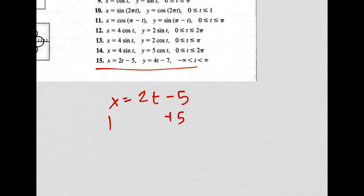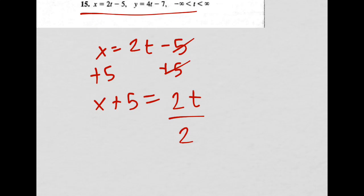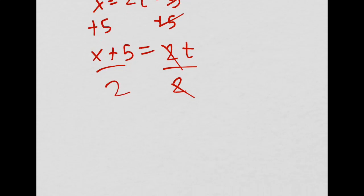I'll add 5 over, plus 5. Oh, that's pretty good. So I get x plus 5 over there, and I get 2t over there, and I divide it by 2, and then I get t.